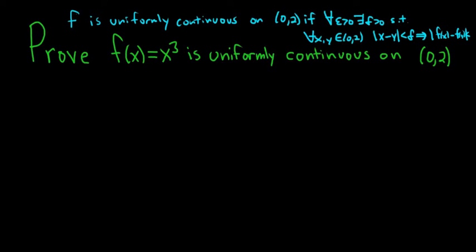So it's very similar to the definition of continuity, except that in uniform continuity, the delta can depend only on the epsilon, right? It cannot depend on a value of x.